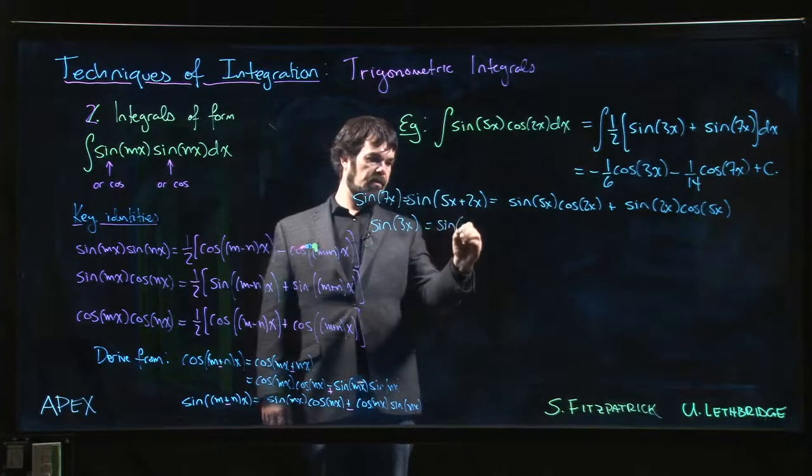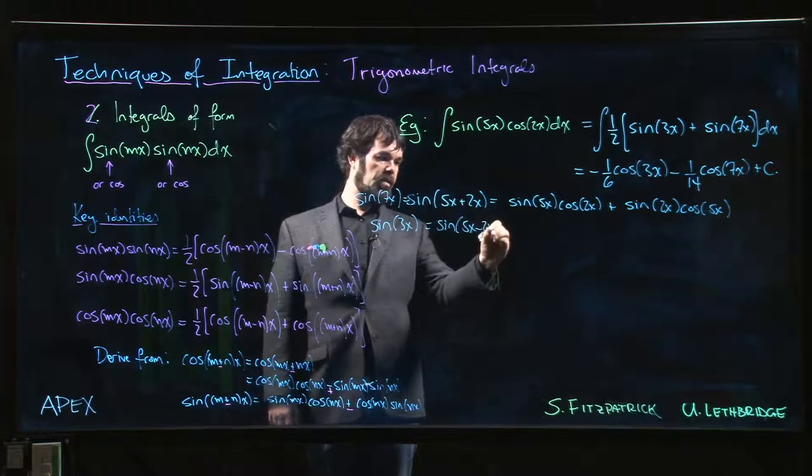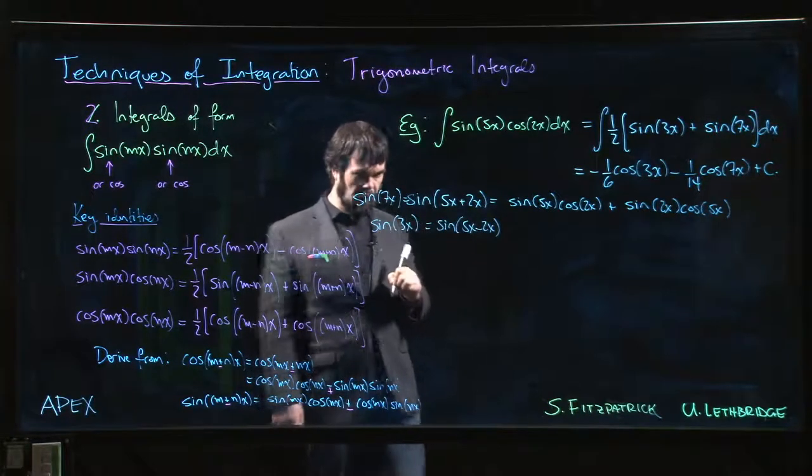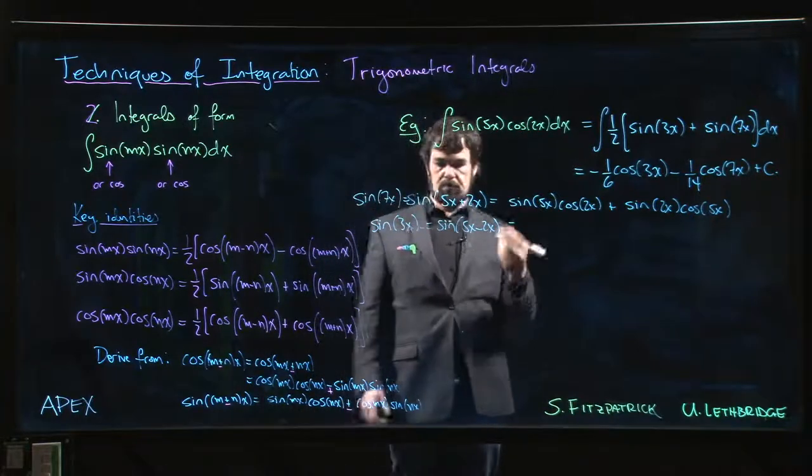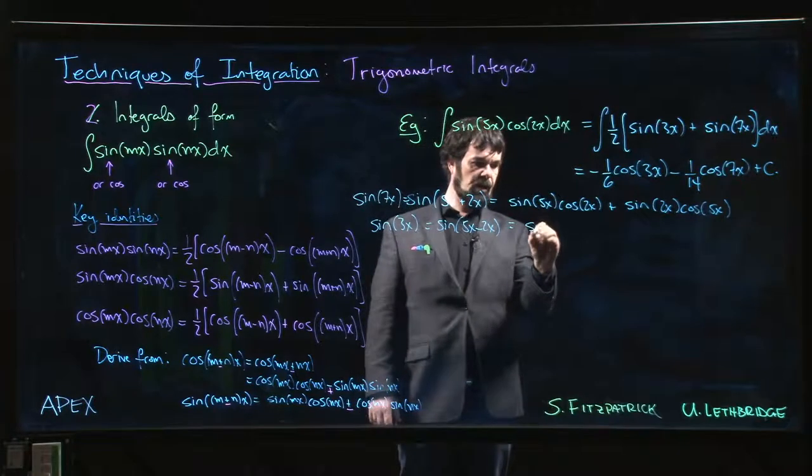Well that's sine of 5x minus 2x. You think about adding or subtracting these—that's how we're getting to there. And then you do these identities.